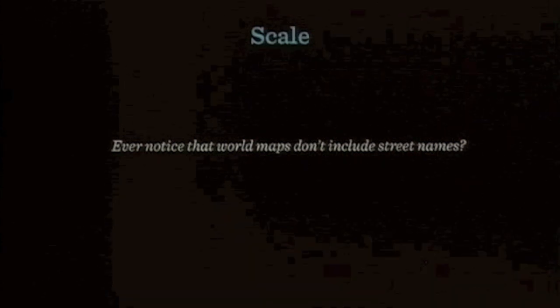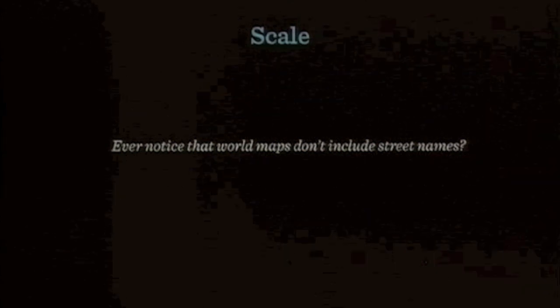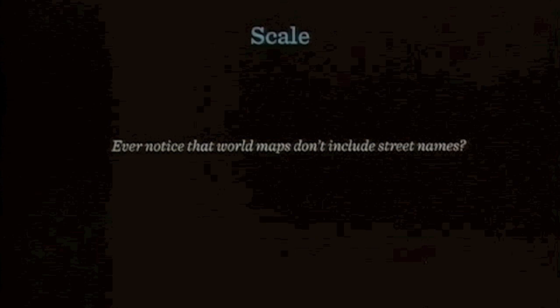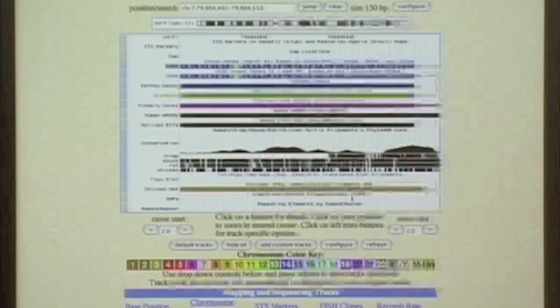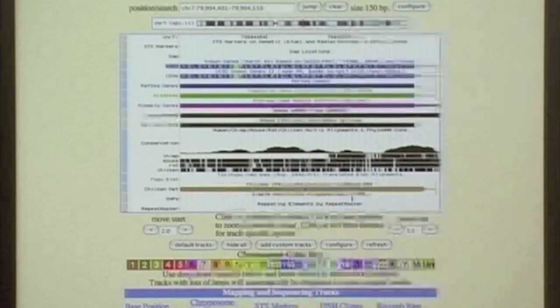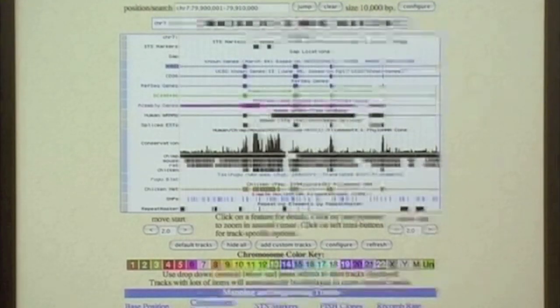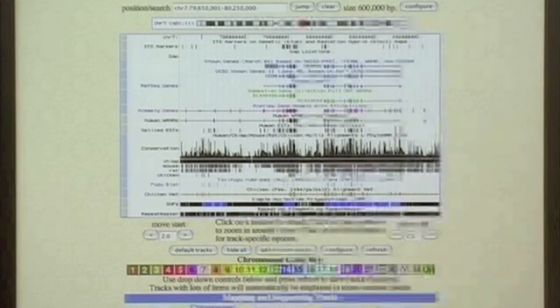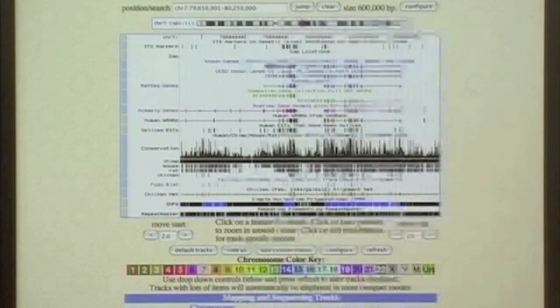Looking at this across another set of topics, scale winds up being an enormous issue. As I talked about the millions of letters of DNA, what can we actually do with that? Your deep thought for the day is: ever notice that world maps don't include street names? The issue is if you're looking at data at various levels, you need a different way to address it. Here for instance with the UCSC genome browser, this is what 150 bases looks like, here's what 10,000 bases looks like, and here's what 600,000 bases looks like. Across this, what's happened is that we were actually looking at the street names even though we're out here at sort of world map scale. So out at 600,000 letters, SNPs probably not very useful at that level, or repeats or some of this other stuff. You really want to think about what's actually relevant at these different levels of scale.